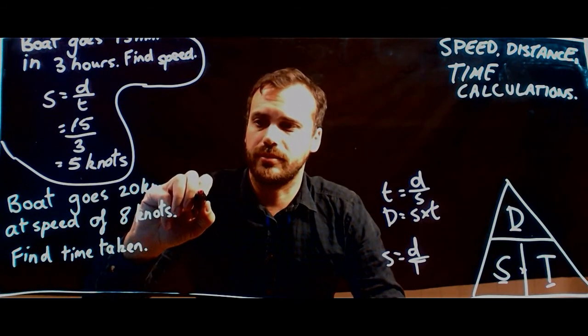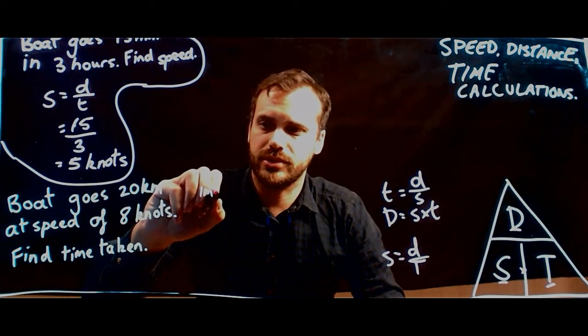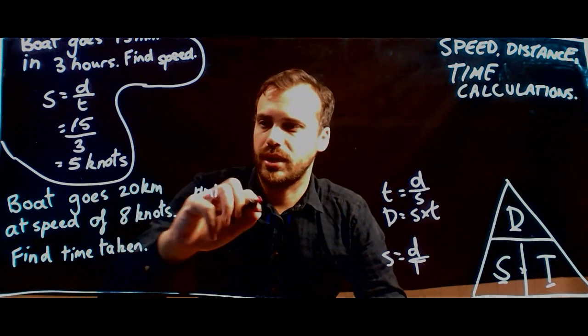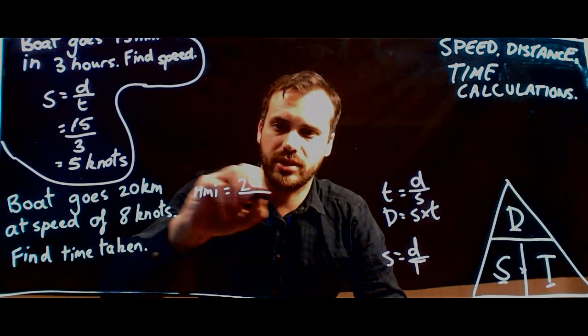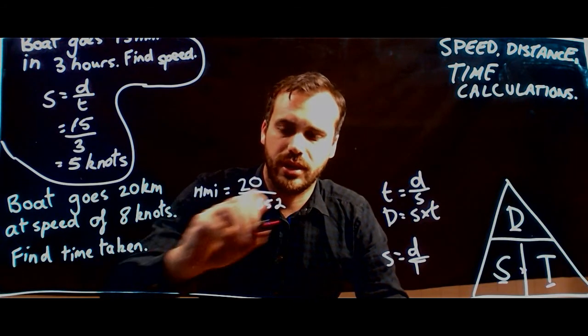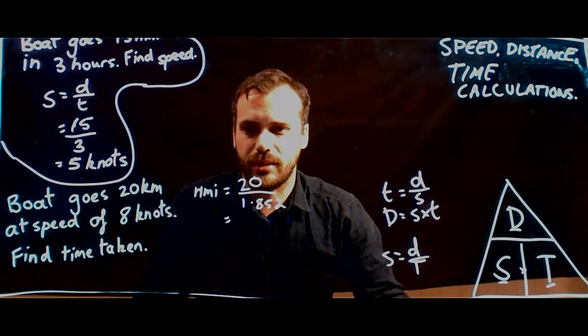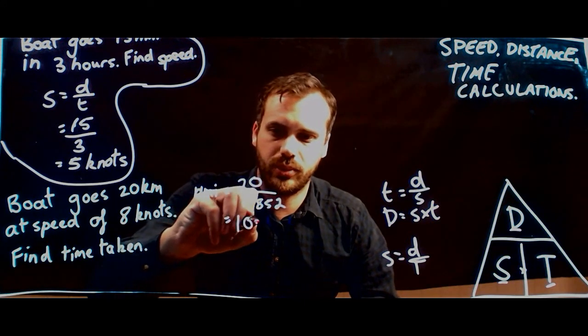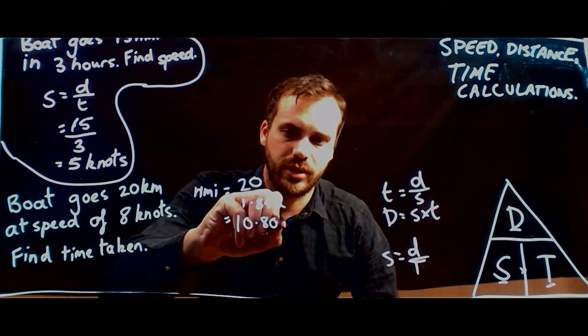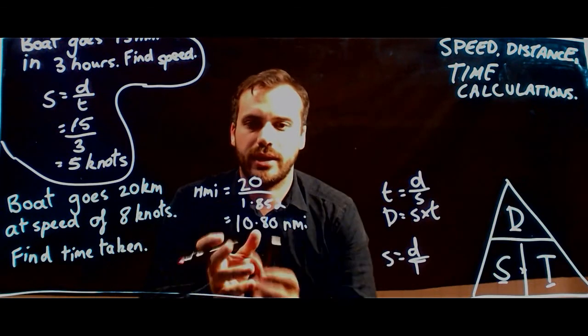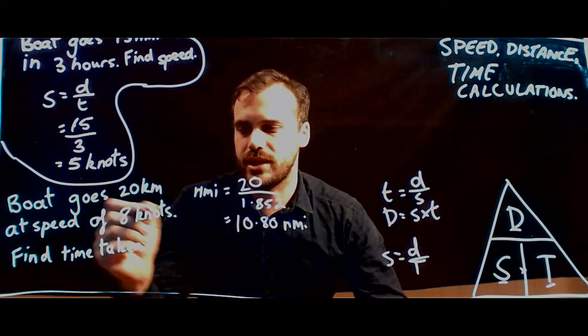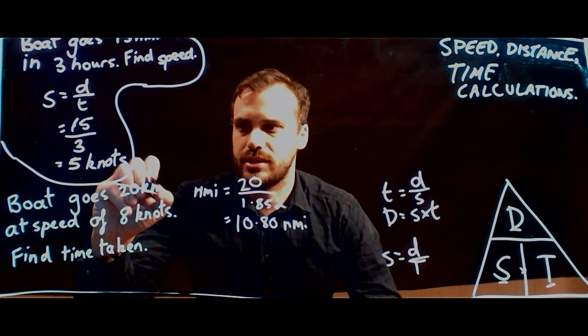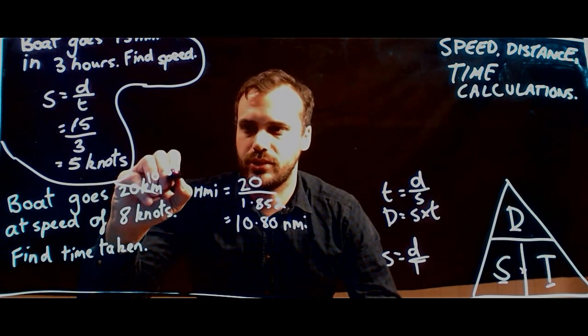Okay, so nautical miles equals 20 divided by 1.852. You'll remember that from a previous video. Okay, and we'll get 10.80 nautical miles. Okay, so now this question makes more sense. The boat doesn't go 20 kilometers. It goes 10.8 nautical miles.